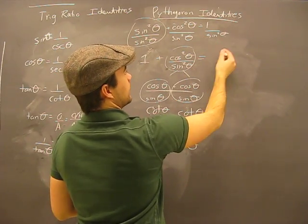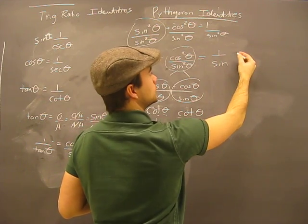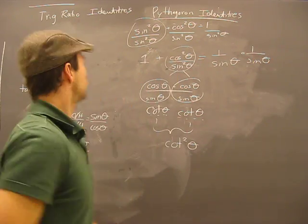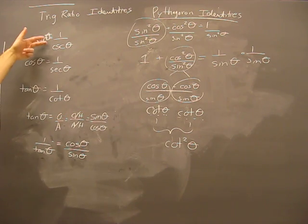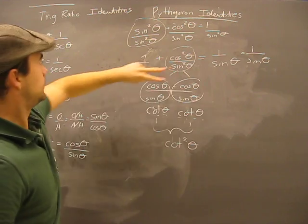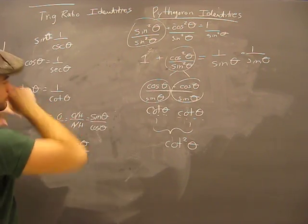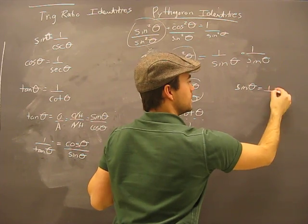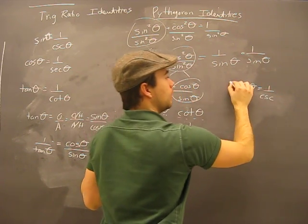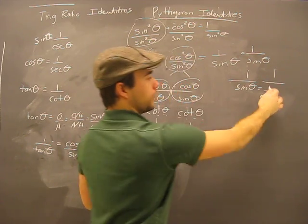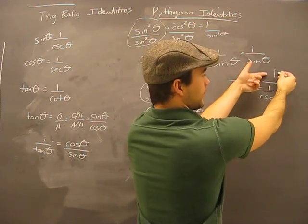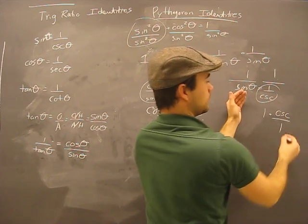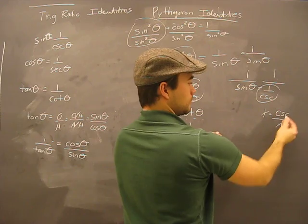And then we still have this guy on the right, 1 over sine squared. Now, what do we know about sine? Sine theta is 1 over cosecant. Therefore, 1 over sine is 1 over 1 over cosecant. If this equals this, then 1 over sine is 1 over 1 over cosecant. Now, when we divide a number by a fraction, this becomes 1 times the reciprocal of the second fraction. Just to refresh the math. All it is, is cosecant theta.